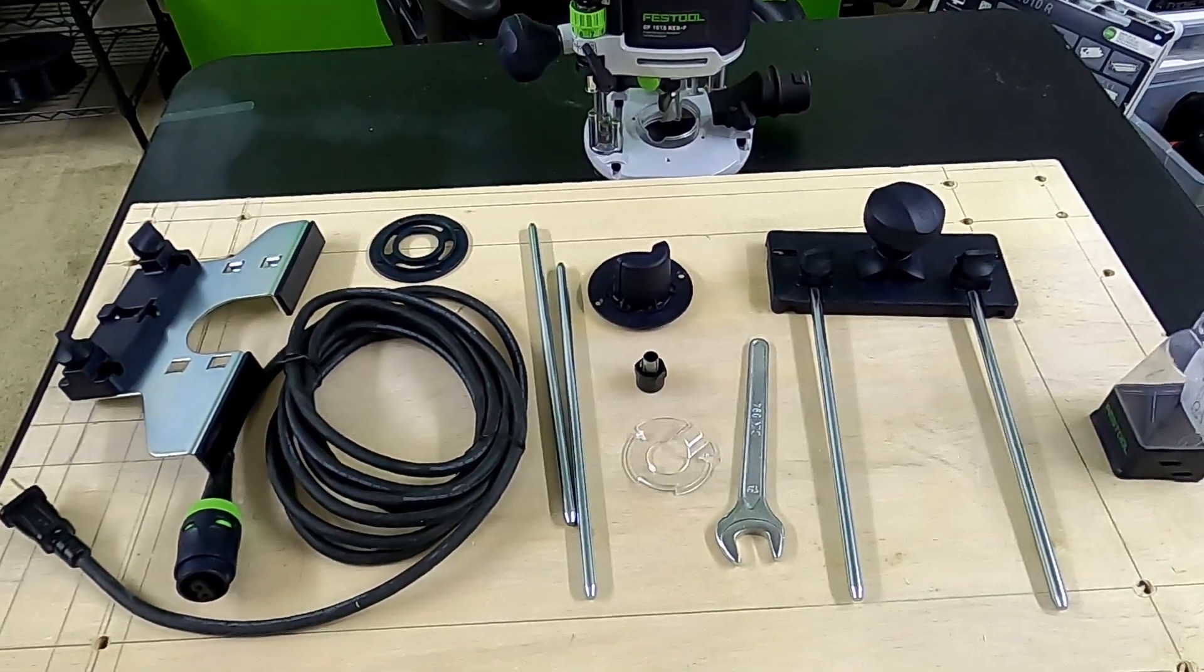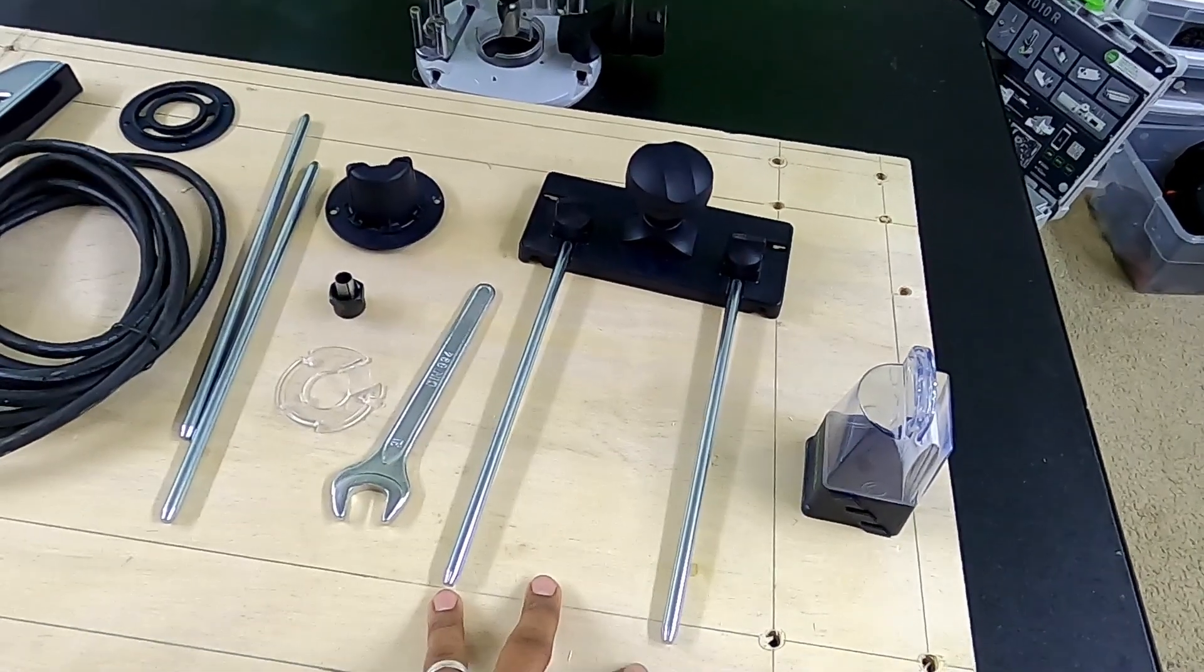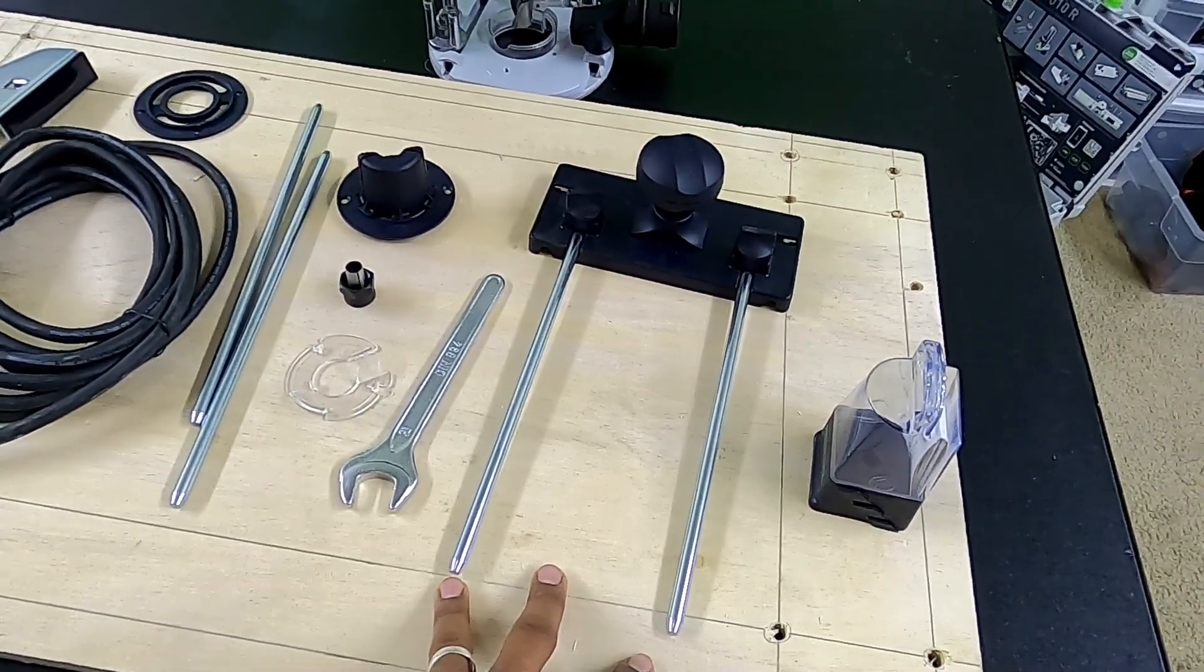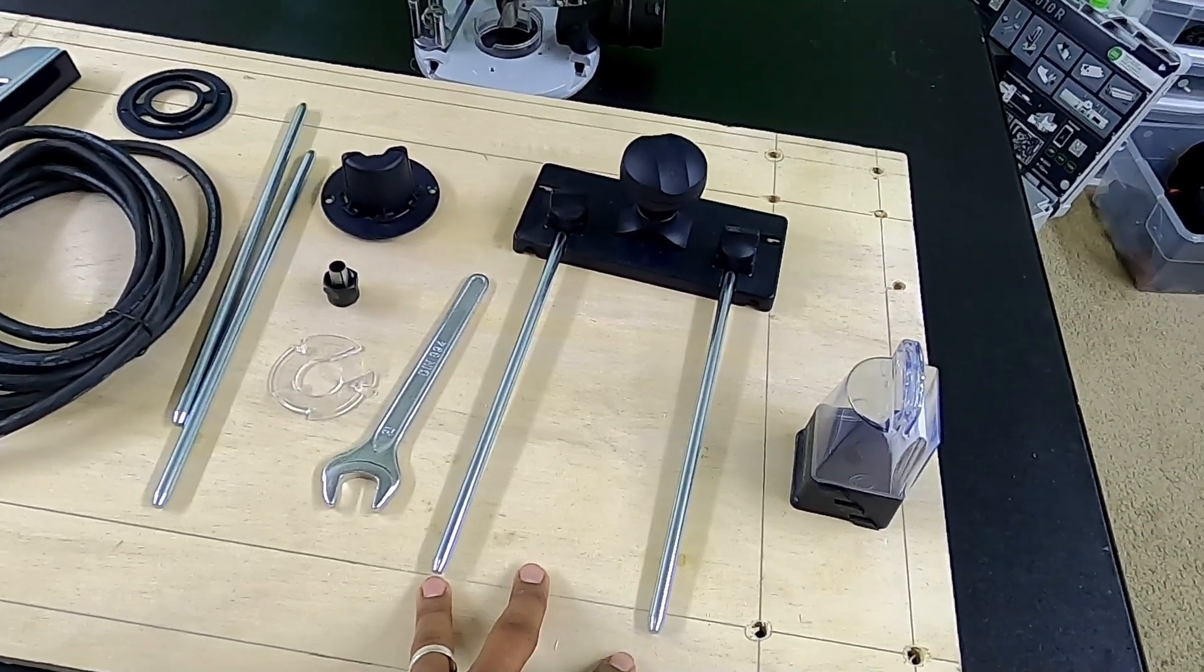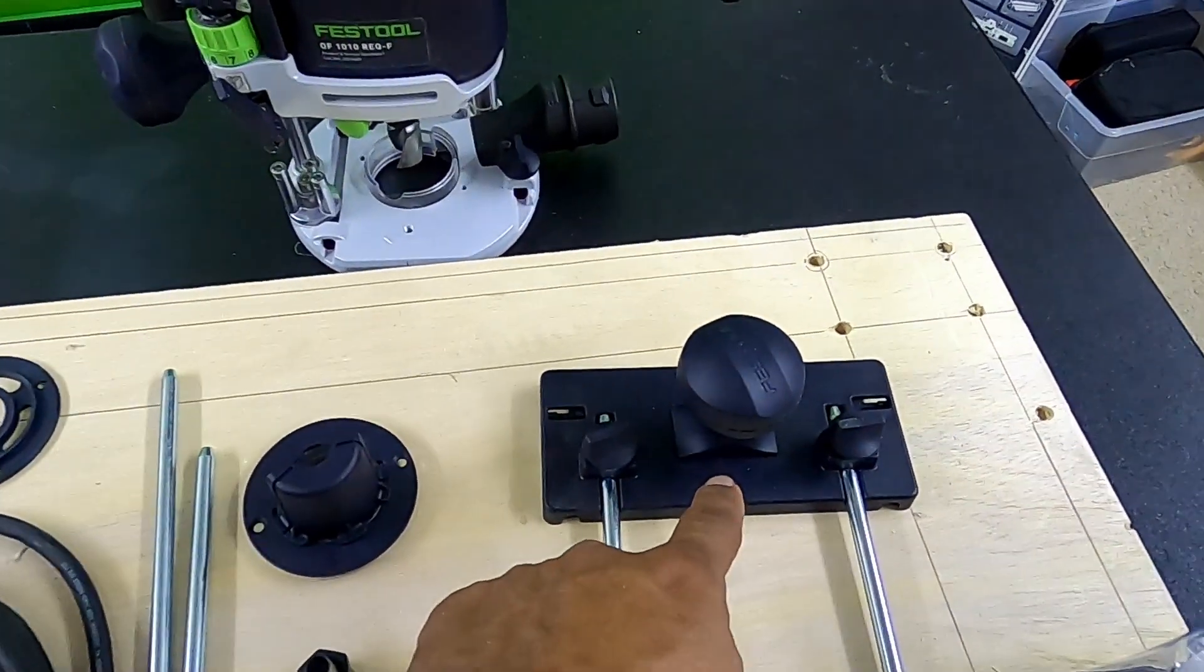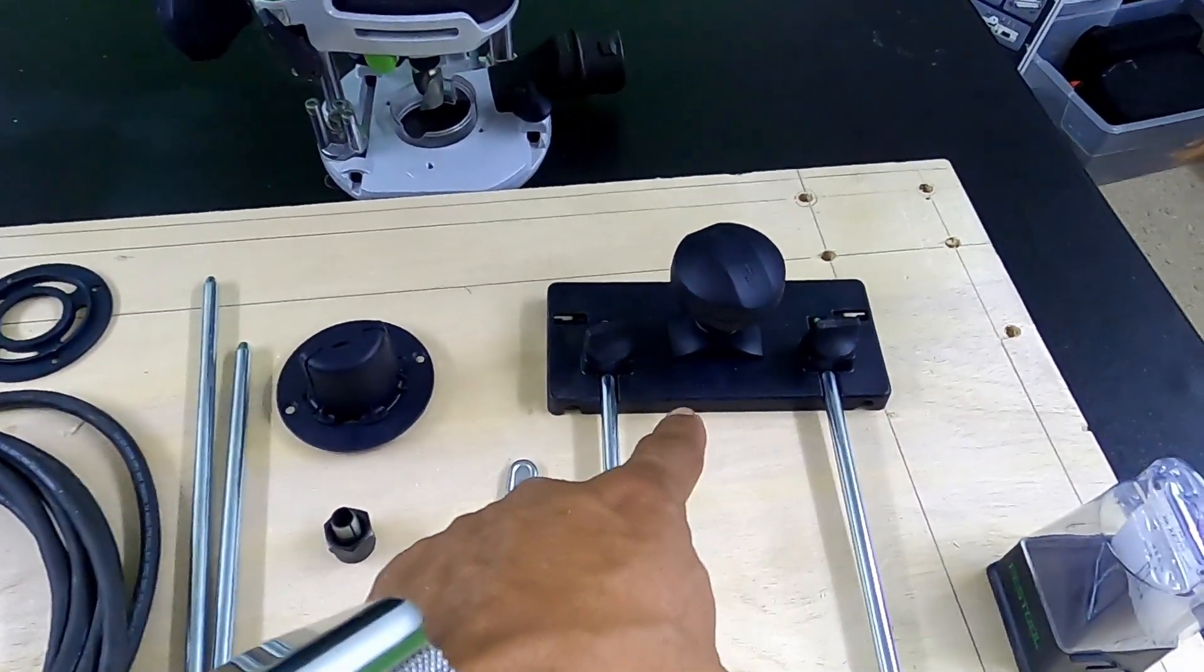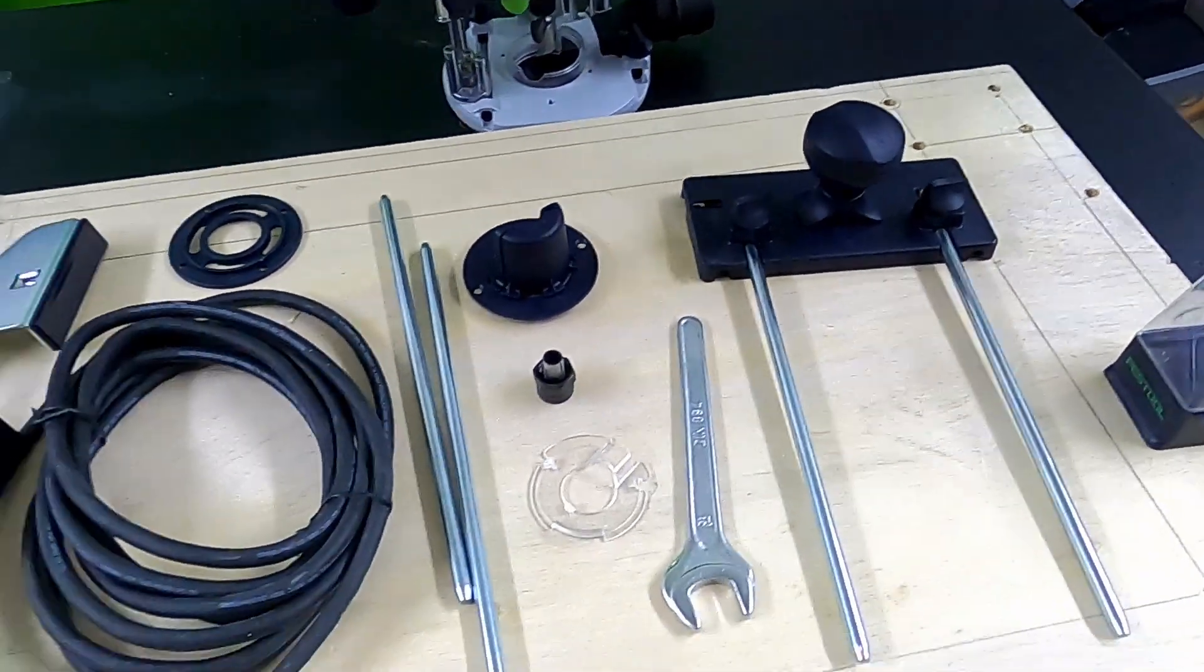That's kind of convenient because then you don't have to switch out the rods like you do on the 2200 and also on the 1400. On those models, you have to use the same set of rods for the edge guide and also for the guide stop for the rail.